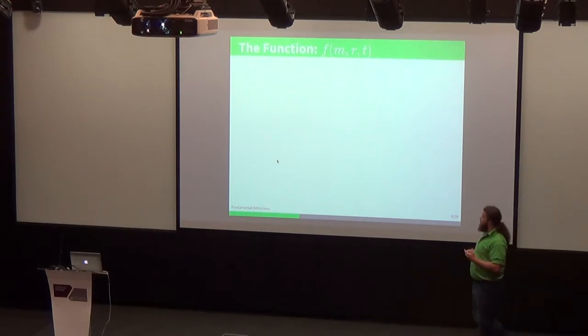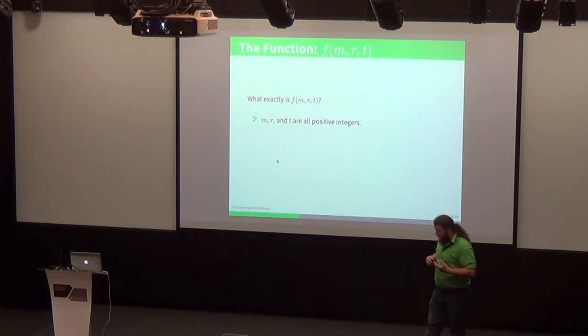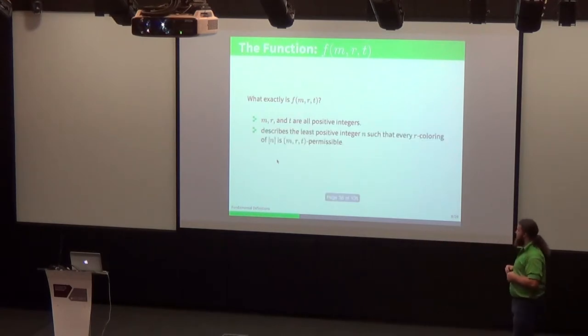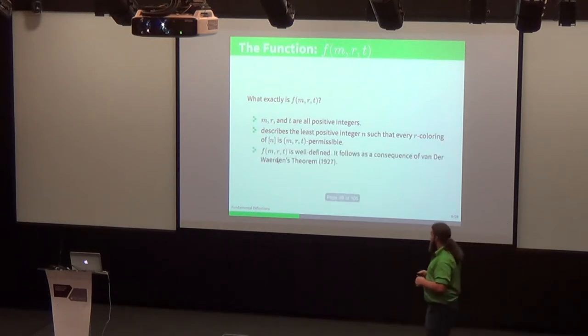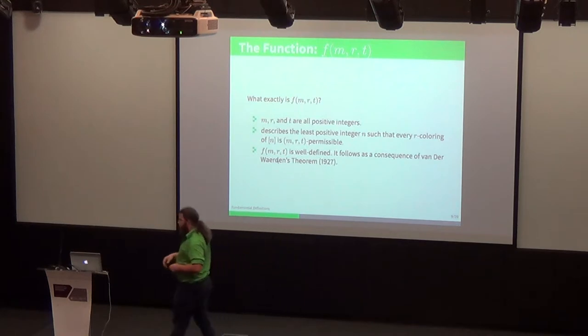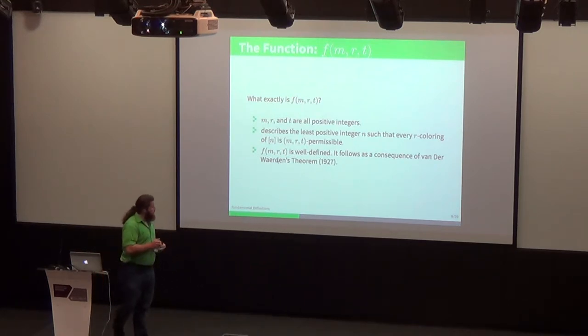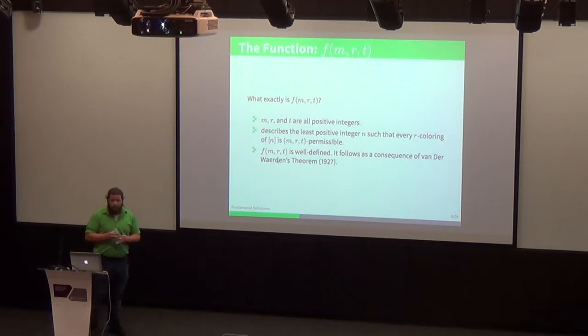We use those parameters to define a function f of m, r, and t. This function takes in those three positive integers and describes the least positive integer n such that every r coloring of n is m, r, t permissible. So no matter how you color that string, you can always find t sets so that your string is m, r, t permissible. And in fact, this is a well-defined function, and it follows as a consequence of Van der Waerden's theorem from almost 100 years ago.